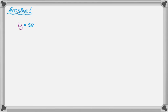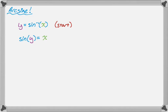Arcsine looks like y equals sine inverse of x. The first thing you're going to do is take the inverse of both sides, so sine of y is equal to x. That's a really important first step — you're going to do that for all of them. And now I'm going to take the derivative of both sides with respect to x.